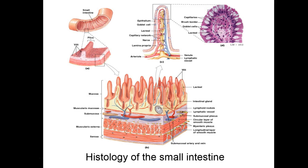On that finger projection, in the middle, you have your lacteal — which is the lymphatic portion of the small intestines — and that's where large fat molecules are going to be absorbed. Surrounding the lacteal are blood vessels, both arterial and venous flow to and from the villi. These are called the villi of the small intestines. On top of the villi are the microvilli, which are projections off the villi.